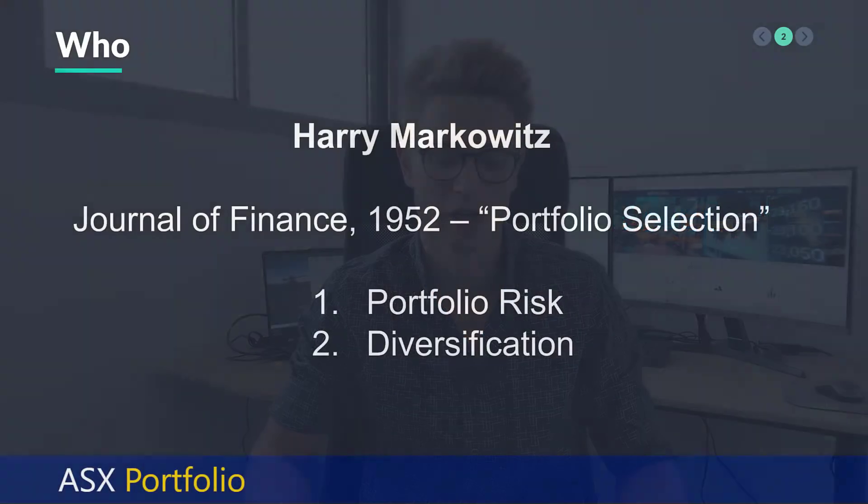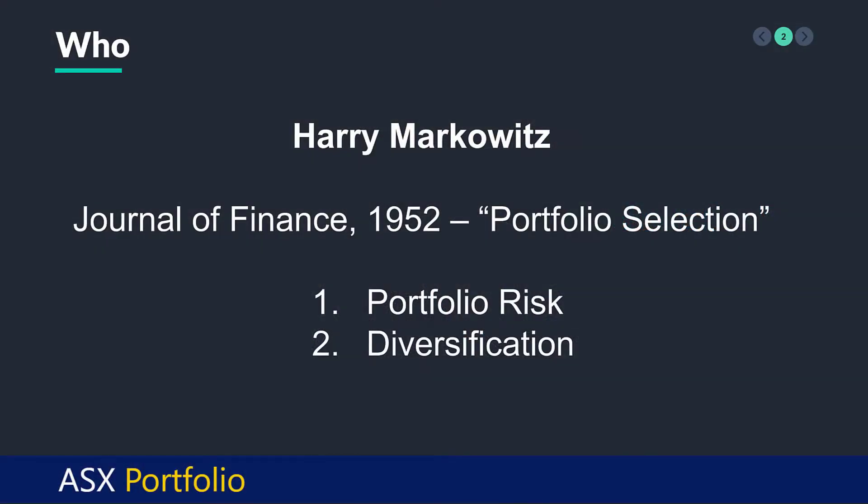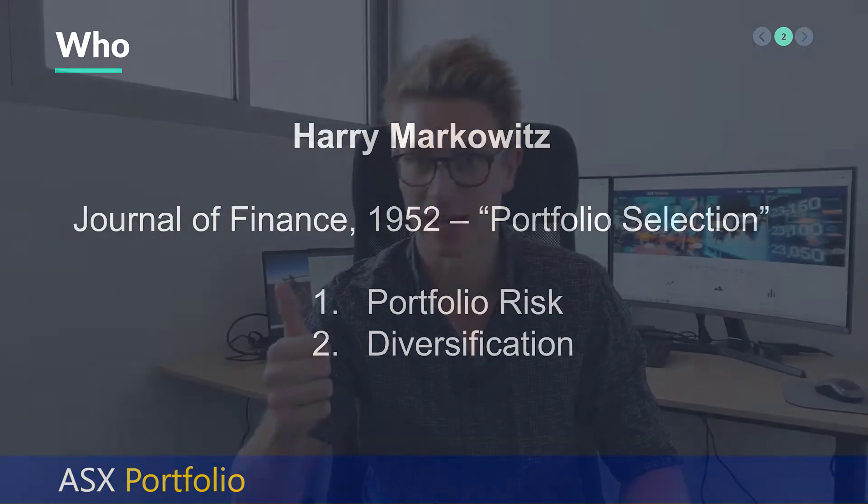This theory was devised by Harry Markowitz and it was first published in the Journal of Finance in 1952 as 'Portfolio Selection'. The main aspects of his paper where he deserves most of the credit are two things: portfolio risk and how he views that, and diversification. Without further ado, let's jump into the formal definition from Investopedia.